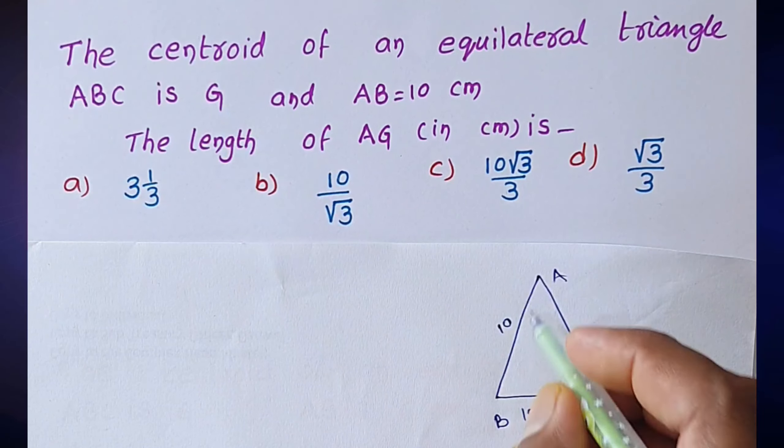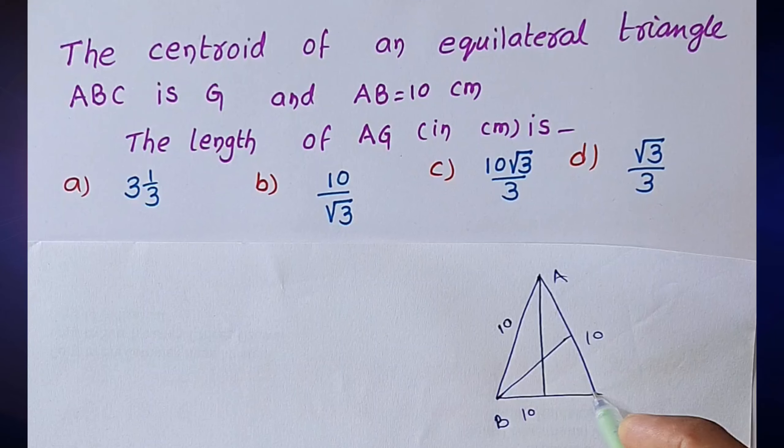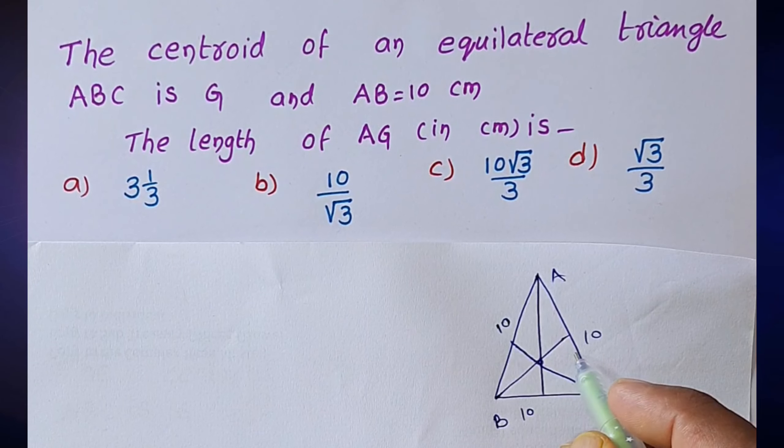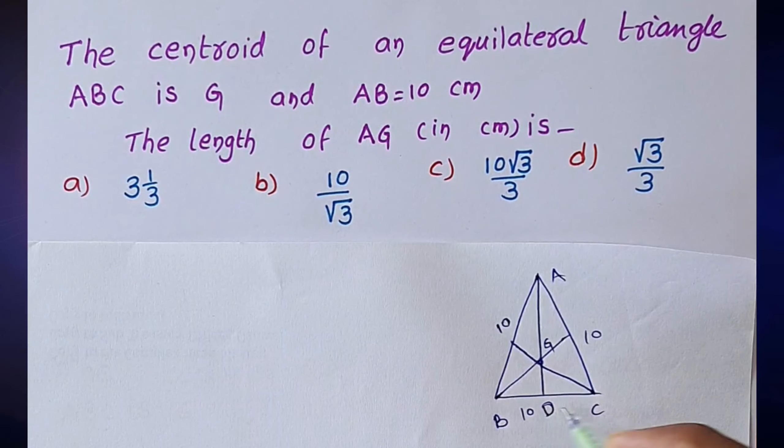G is the centroid. Draw the medians. Three medians are intersected at a point that is called centroid. This one is G. AD is the median.